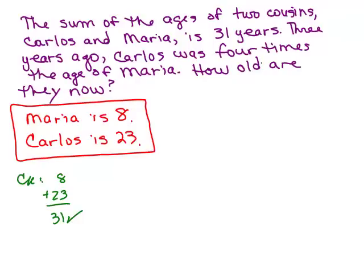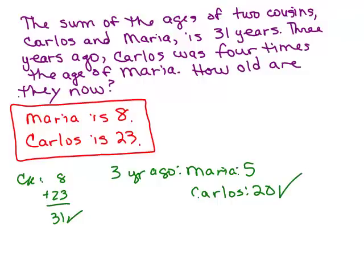Three years ago, Carlos was four times the age of Maria. Okay, so three years ago. All right, let's write down what each of them would be. What would Maria be three years ago? She's 8 now. Three years ago, how old would she be? She'd be 5. Carlos is 23 right now. So how old would he be three years ago? He would be 20. So is it true that three years ago that Carlos was four times as old as Maria? Yes, because if she was five, five times four is 20. So it checks. So that means our answer here, Maria is 8 and Carlos is 23, is correct.